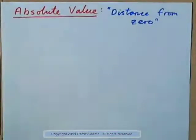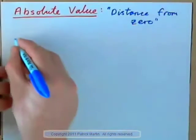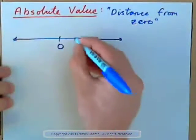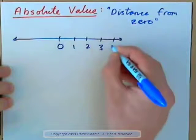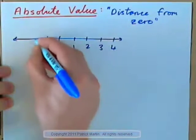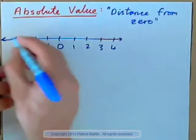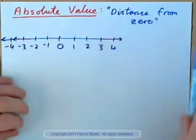Absolute value means distance from zero on a number line. If we were to draw a number line like this, with zero in the middle, and go one, two, three, four, negative one, negative two, negative three, and negative four, and so on — let's have a look at what this would be.